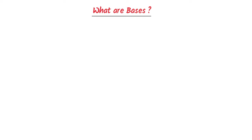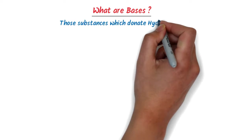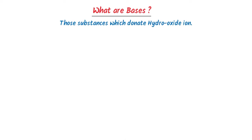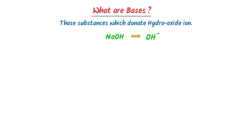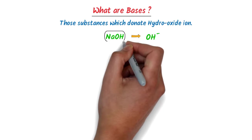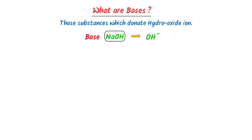The second main topic is: what are bases? According to the Arrhenius concept, those substances which can donate hydroxide ion are called bases. For example, consider sodium hydroxide. We know that sodium hydroxide can easily donate hydroxide ion, so we say that sodium hydroxide is a base.